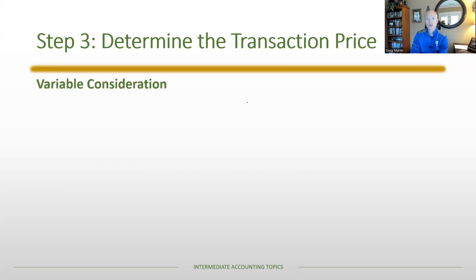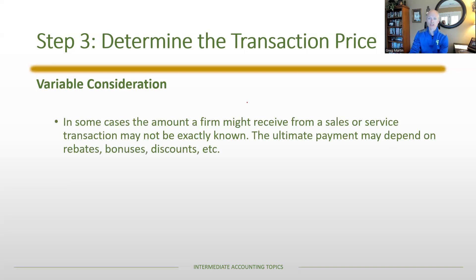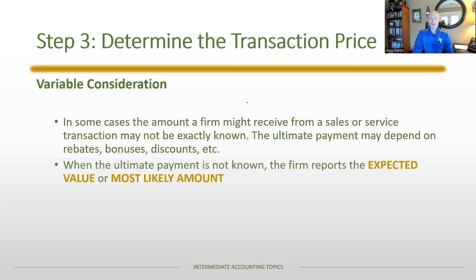One of the common issues with determining the transaction price is variable consideration — a situation where some portion of the sales price is not determined or cannot be exactly known. There could be things like rebates, bonuses, or discounts that might ultimately change what you actually collect when you make your sale. When the amount is not exactly known, there are really two ways to handle it: using the expected value or using the most likely amount.